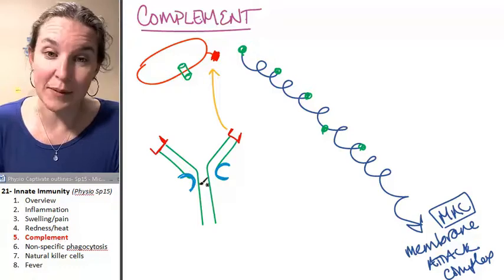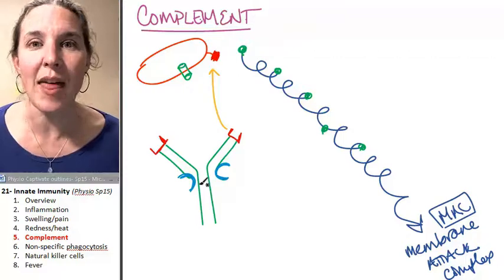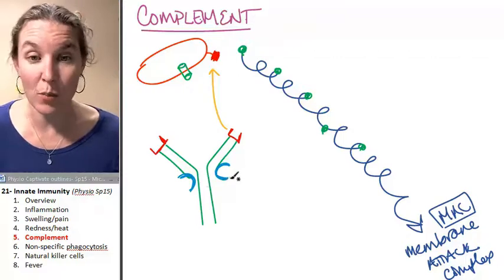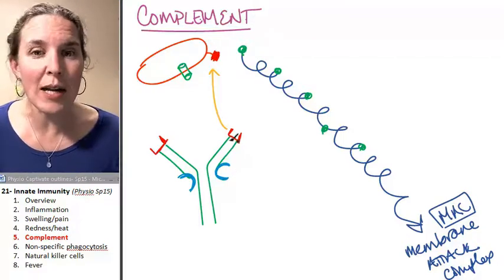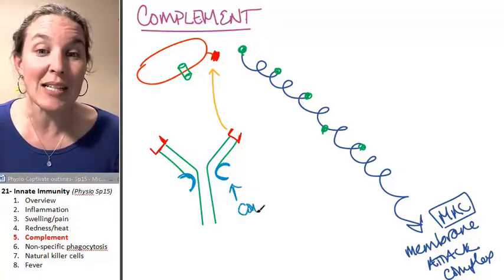Seriously. That normally the antibody shape covers that place. Like it's not available. But if the antibody binds with the antigen, then this complement binding site,